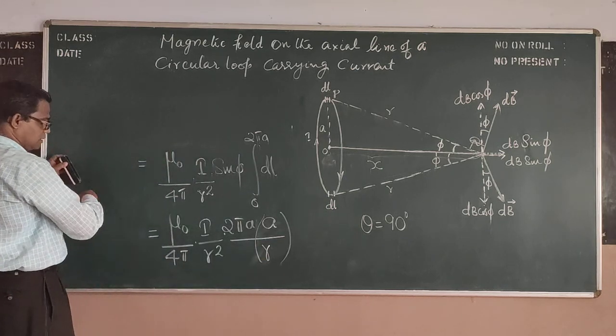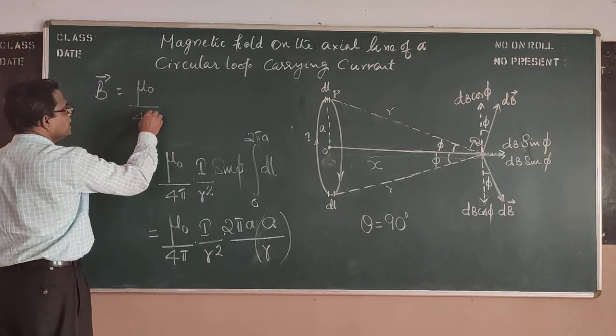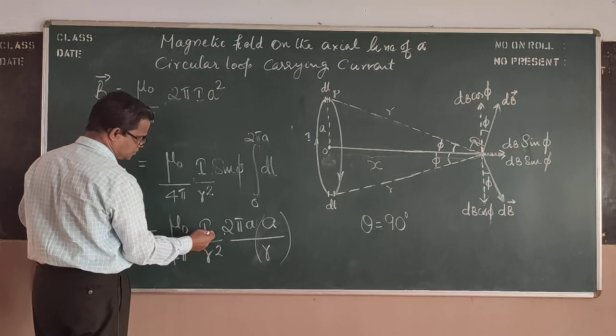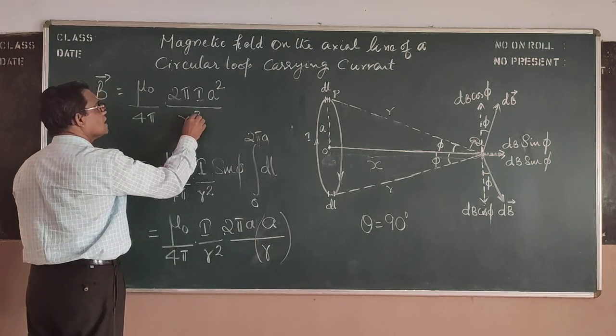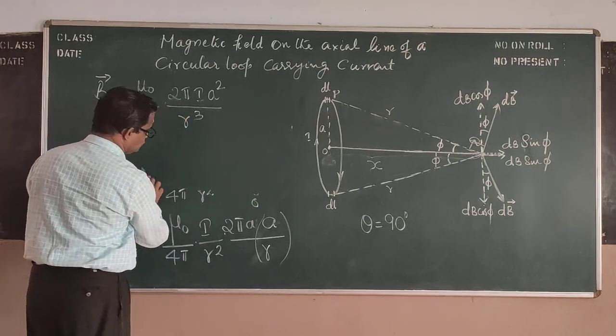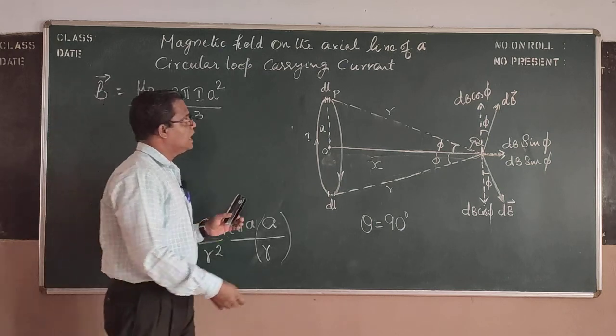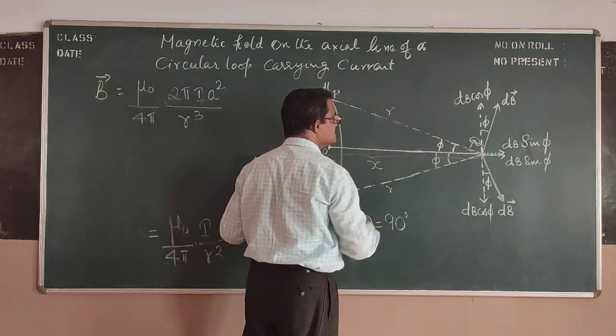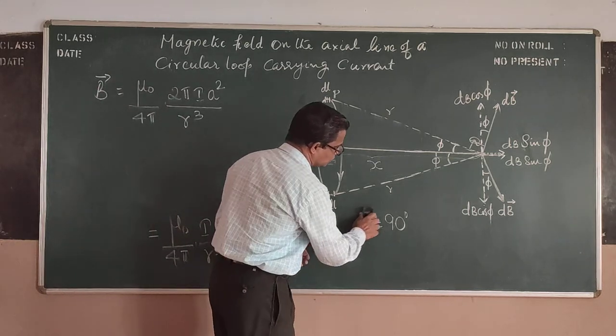So when I write sine phi as A by R, this A by R together I can write that B equal to mu_0 by 4 pi into 2 pi I A square divided by R cube.